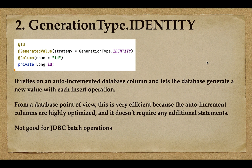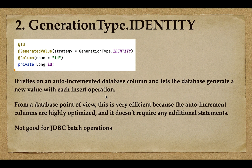The next strategy is GenerationType.IDENTITY, which relies on an auto-incremented database column and lets the database generate a new value for each insert operation. You may be familiar with the SQL DDL property AUTO_INCREMENT — each time a new row is inserted, the database auto-increments the primary key value. To use it, pass GenerationType.IDENTITY as the value to the strategy attribute of @GeneratedValue. From a database perspective this is very efficient because auto-increment columns are highly optimized and require no additional statements. However, a drawback with Hibernate is that it must immediately create the primary key before inserting the record.